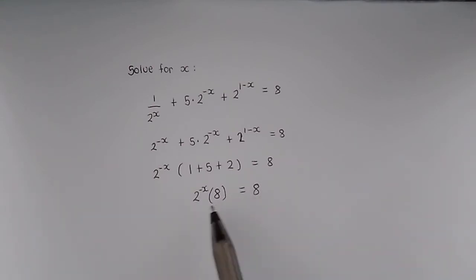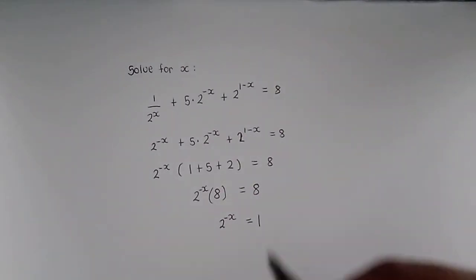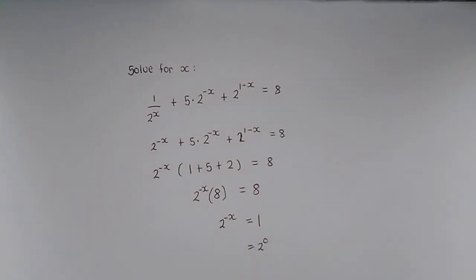When we divide both sides by 8 we'll have 2^(-x) equals 1. We can definitely write 1 as a base 2, that's just going to be 2^0.